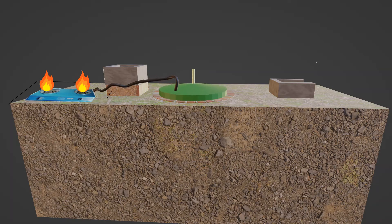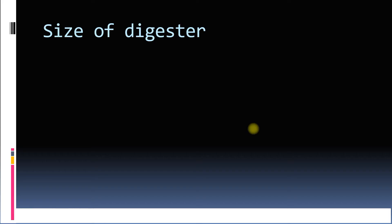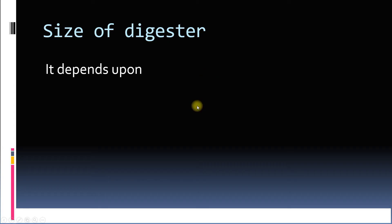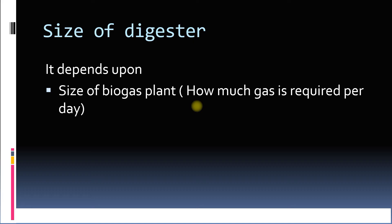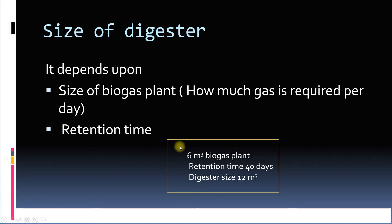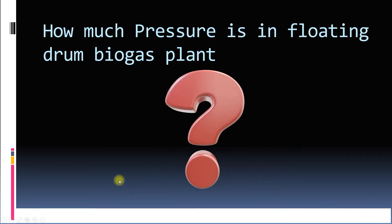When gas is used for cooking or another purpose, the gas holder moves down. Regarding digester size: the size of the digester depends on the size of the biogas plant and the retention time, which in turn depends on the temperature of the region. For a 6 cubic meter cattle-dung-based biogas plant with a retention time of 40 days, the digester size will be 12 cubic meters.